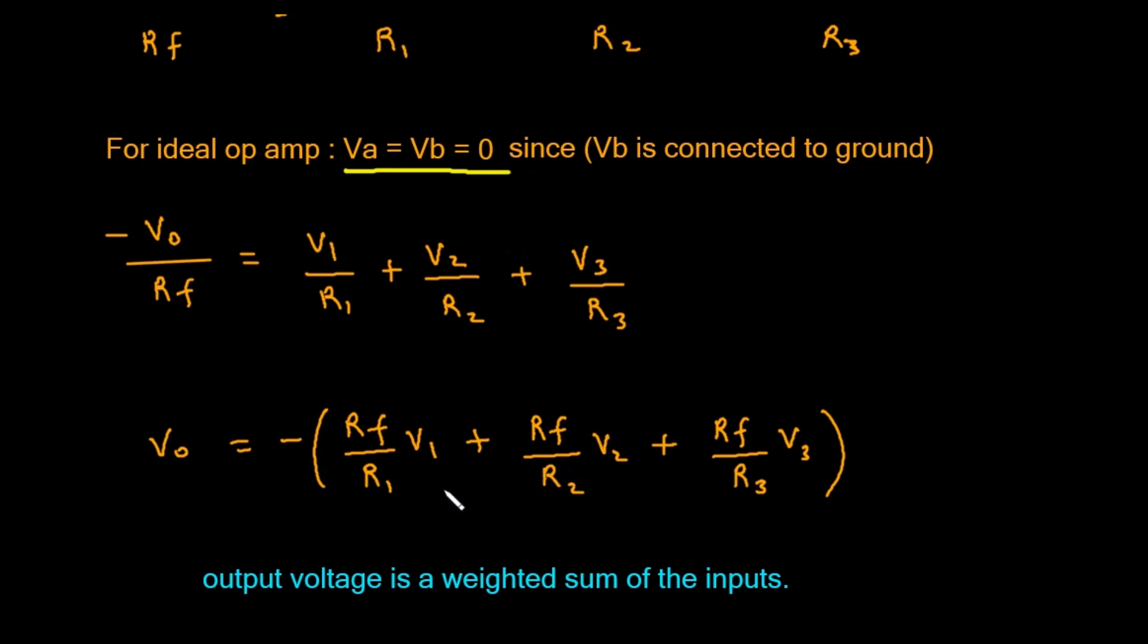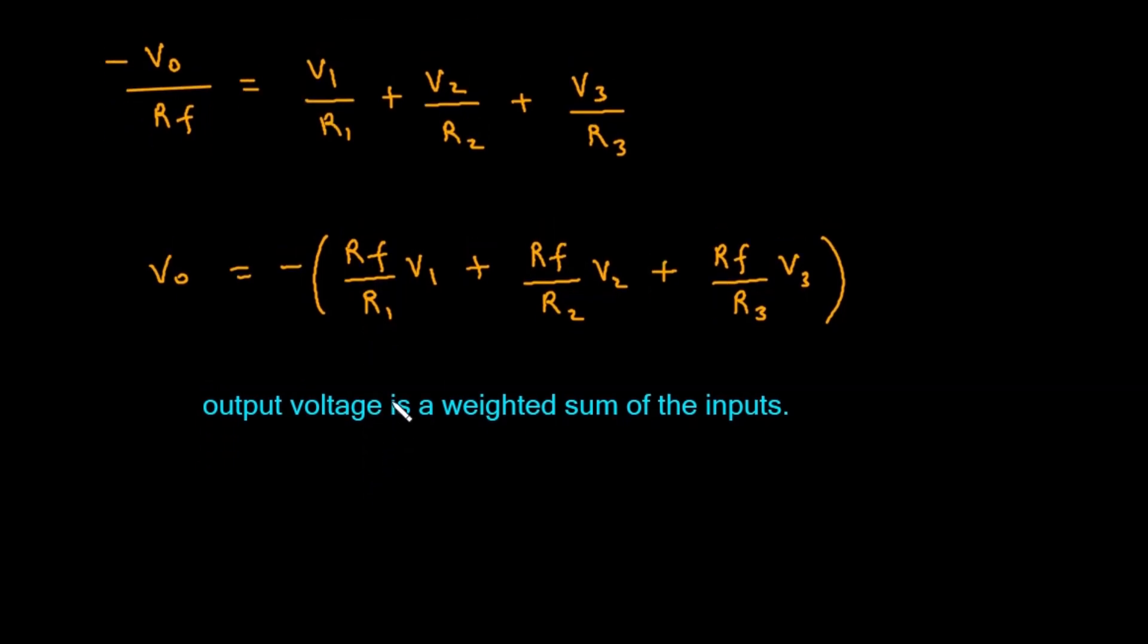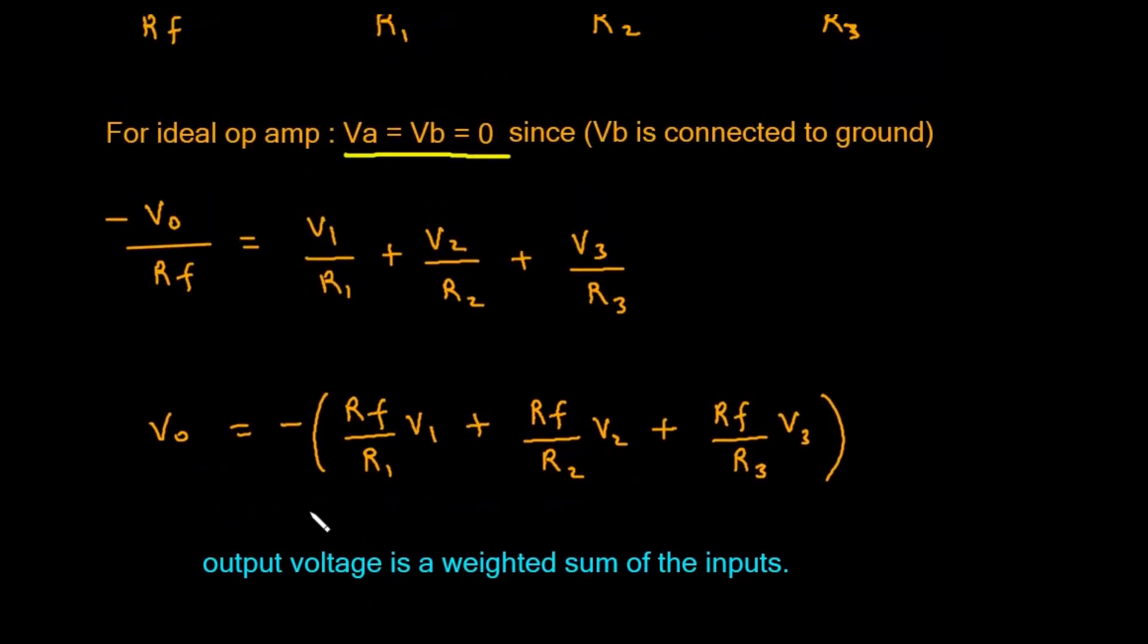Now, look inside the parentheses. We are adding the input voltages, but not directly. Each input voltage is first multiplied by a factor. This factor is the ratio of the feedback resistor, Rf, to that input-specific resistor. This is why the final note says: output voltage is a weighted sum of the inputs. The weight, or importance, of each input voltage is set by that ratio of resistors.